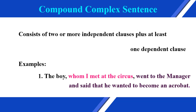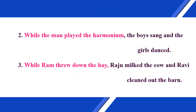Nowadays, a new type of sentence is added along with these three types of sentences. That is, compound-complex sentence. A compound-complex sentence consists of two or more independent clauses plus at least one dependent clause. Examples: the boy whom I met at the circus went to the manager and said that he wanted to become an acrobat; while the man played the harmonium, the boys sang and the girls danced; while Ram threw down the hay, Raju milked the cow and Ravi cleaned out the barn. In these sentences, the pink parts are dependent clauses and the remaining parts are independent clauses.